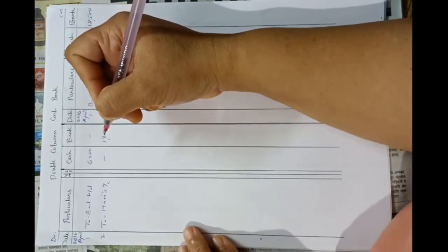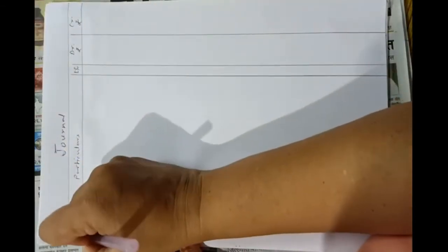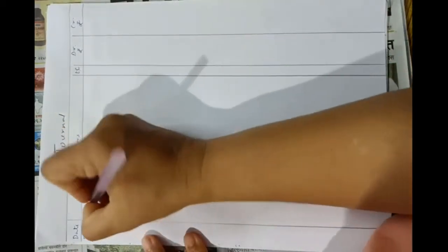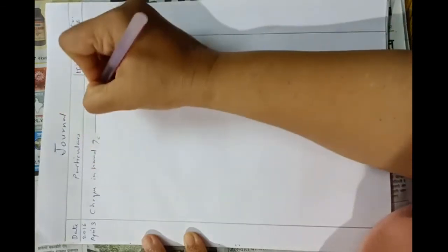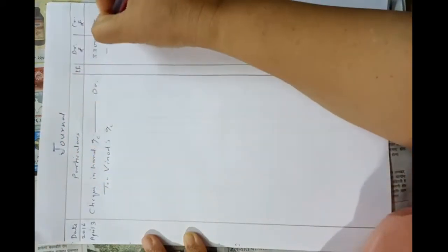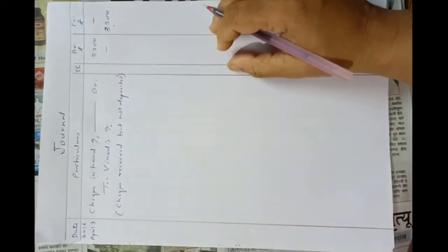On 3rd April, received a check from Vinod, Rs. 3,300. This check has not been deposited into bank, so we will pass the journal entry in the journal: check in hand account debit to Vinod's account, Rs. 3,300. Check received but not deposited into bank.